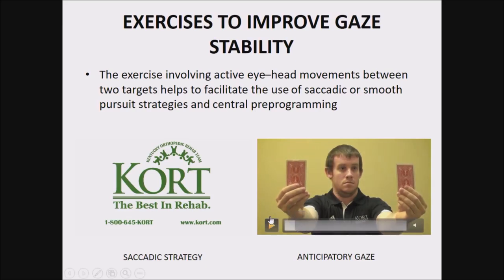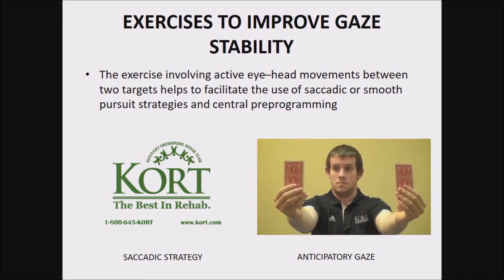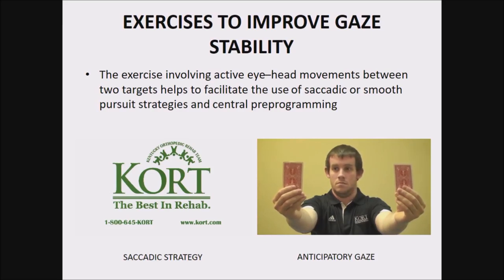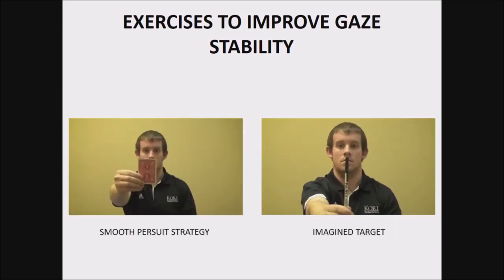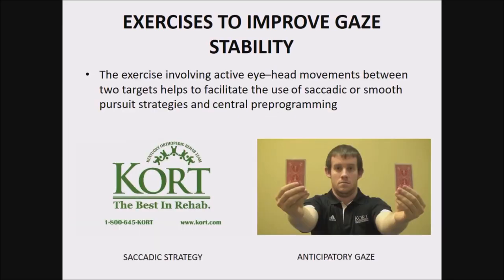The anticipatory gaze exercise is very important. The patient uses two cards, looks at one card, and turns his head. This basically trains an anticipatory gaze and improves the saccadic strategy. Improvement in the saccadic system compensates for the complete loss of VOR that occurs in these patients.